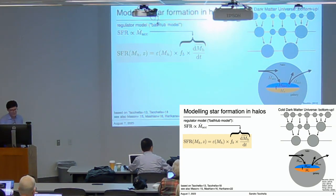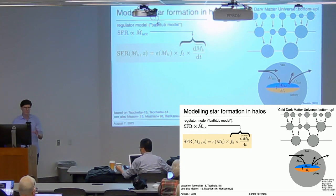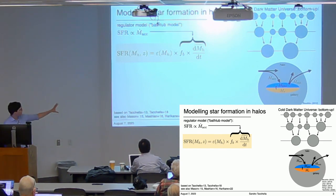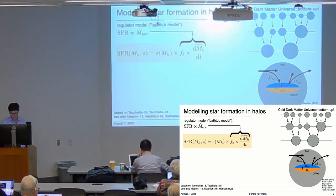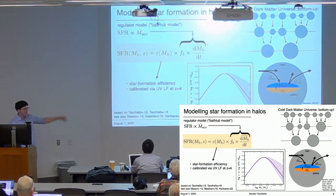First, let's take a step back and try to understand how star formation might proceed in a Lambda CDM universe. We have been building simple toy models where we assume that the star formation in a galaxy is proportional to the dark matter accretion rate times the baryon fraction. Typically we assume that the star formation efficiency is redshift independent and only depends on halo mass. When calibrated, one gets a characteristic curve for star formation efficiency that peaks around a halo mass of about 10^11 solar masses.